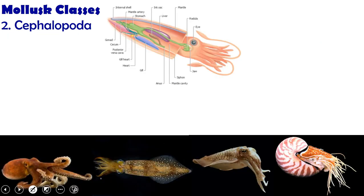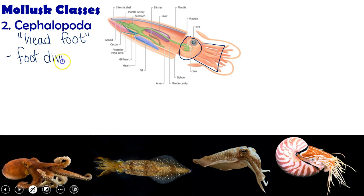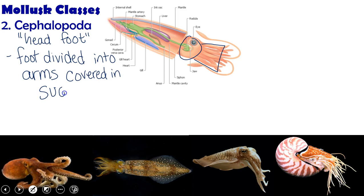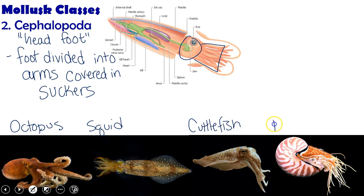Our last group of mollusks is the cephalopods. The word cephalopoda means 'head foot' — the head is right on top of the foot in a cephalopod. The foot is divided into arms, and they're called arms, not tentacles; tentacles have a different use. These arms are covered with suckers and are used for movement and capturing food. Varieties of cephalopods include octopus, squid, cuttlefish, and the chambered nautilus, which can have a shell on the outside and use it almost as a float or submarine to go up and down in the water. Octopus do some really cool things with camouflage and movement — please watch the videos on Verge.